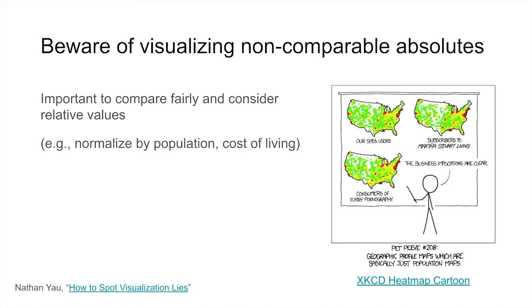A classic and humorous example of visualizing non-comparable absolutes comes from the technology-focused XKCD comic. The comic shows three maps that look almost identical but have wildly different datasets. The caption says, Pet peeve number 208, geographic profile maps, which are basically just population maps. This comic challenges the idea that these three disparate datasets are in some way connected just because the maps look similar.